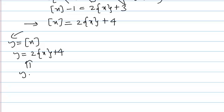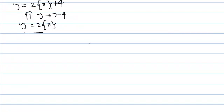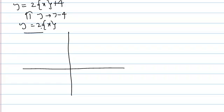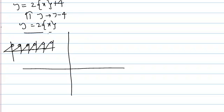To draw the second graph, we first draw y equals 2 into fractional part of x, then shift it 4 units up by replacing y with y minus 4. The fractional part of x graph lies between 0 and 1. Because of the factor of 2, all values that used to terminate at 1 will now go up to 2. The intervals and critical points are the same — only the height changes.